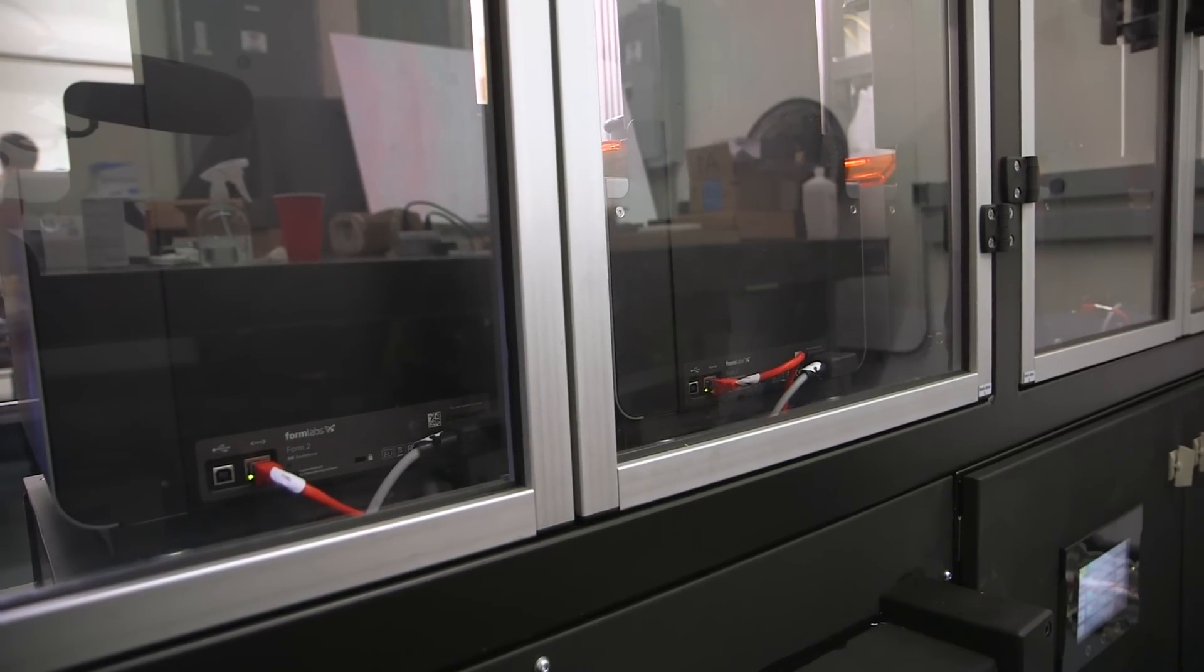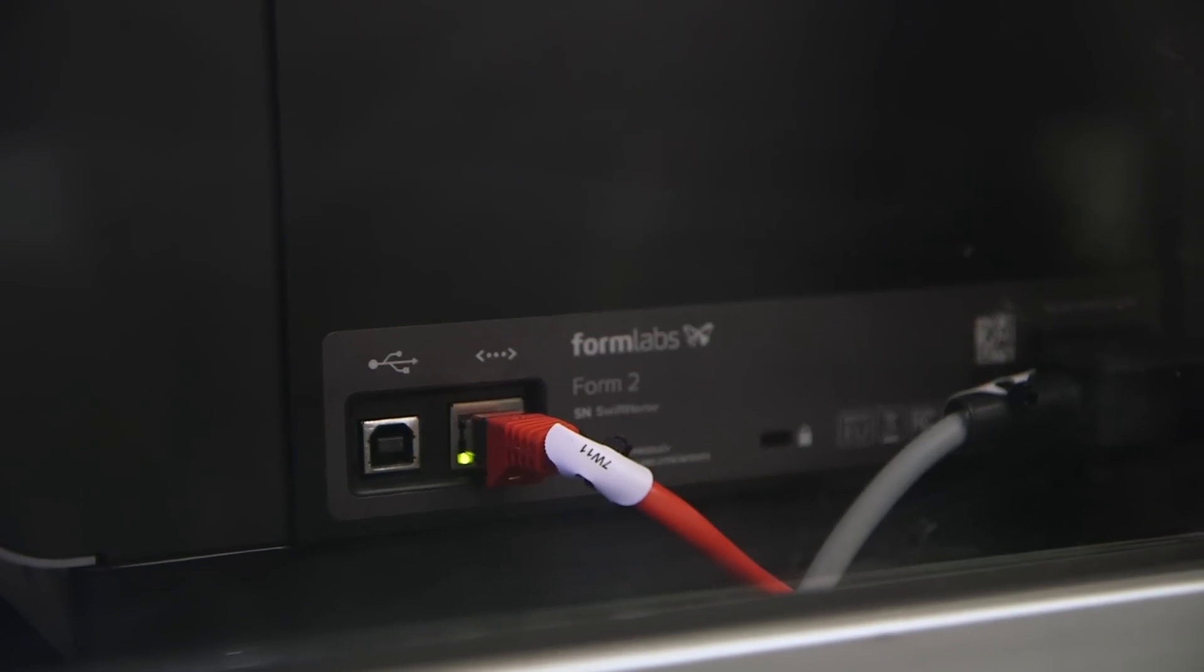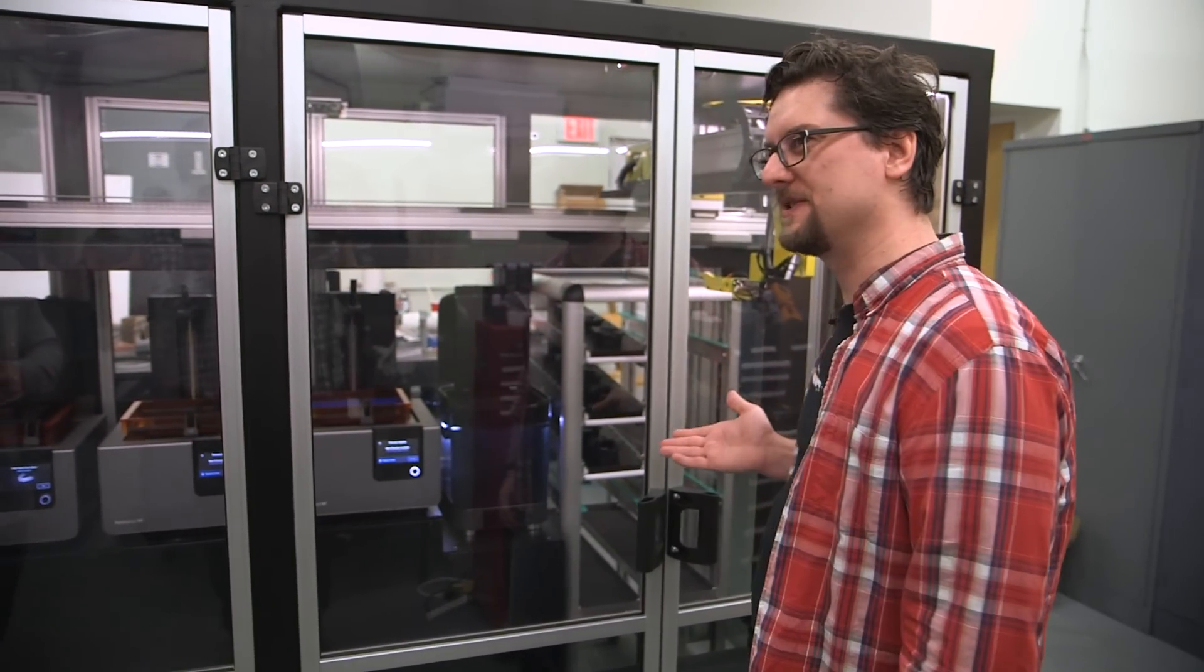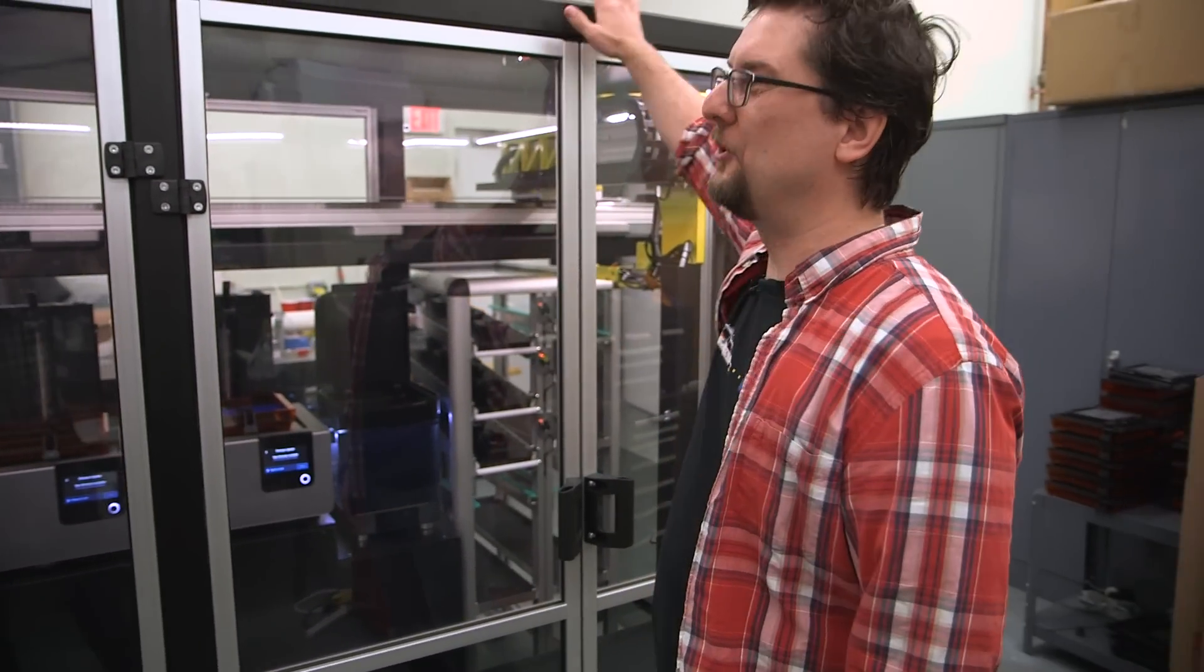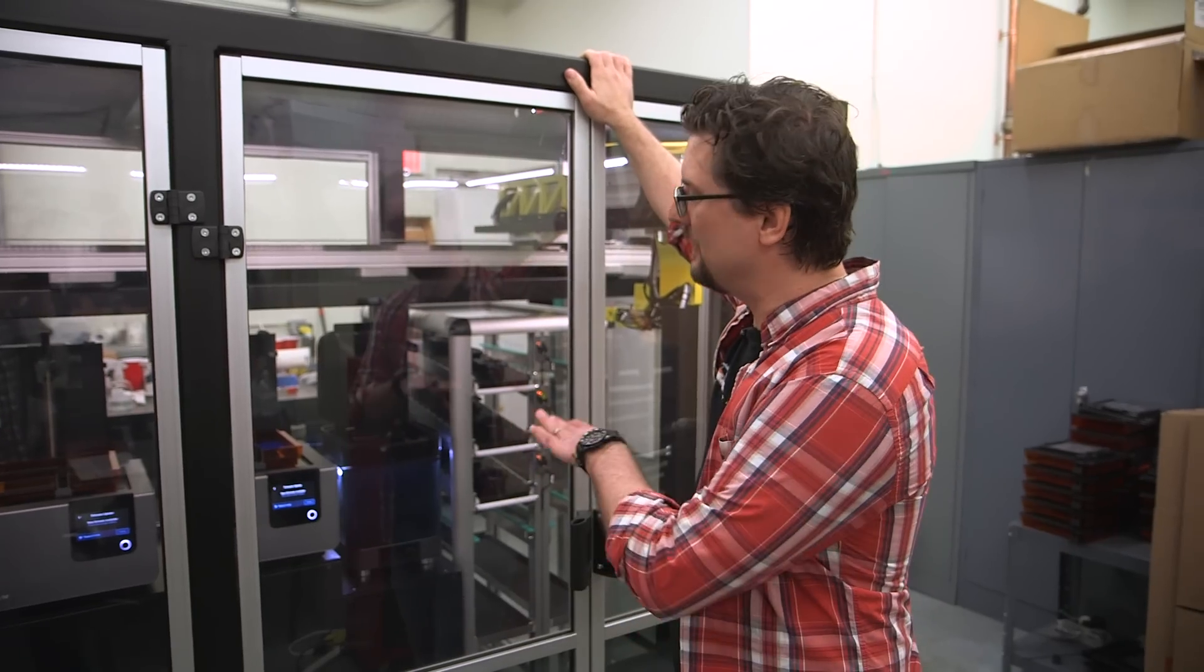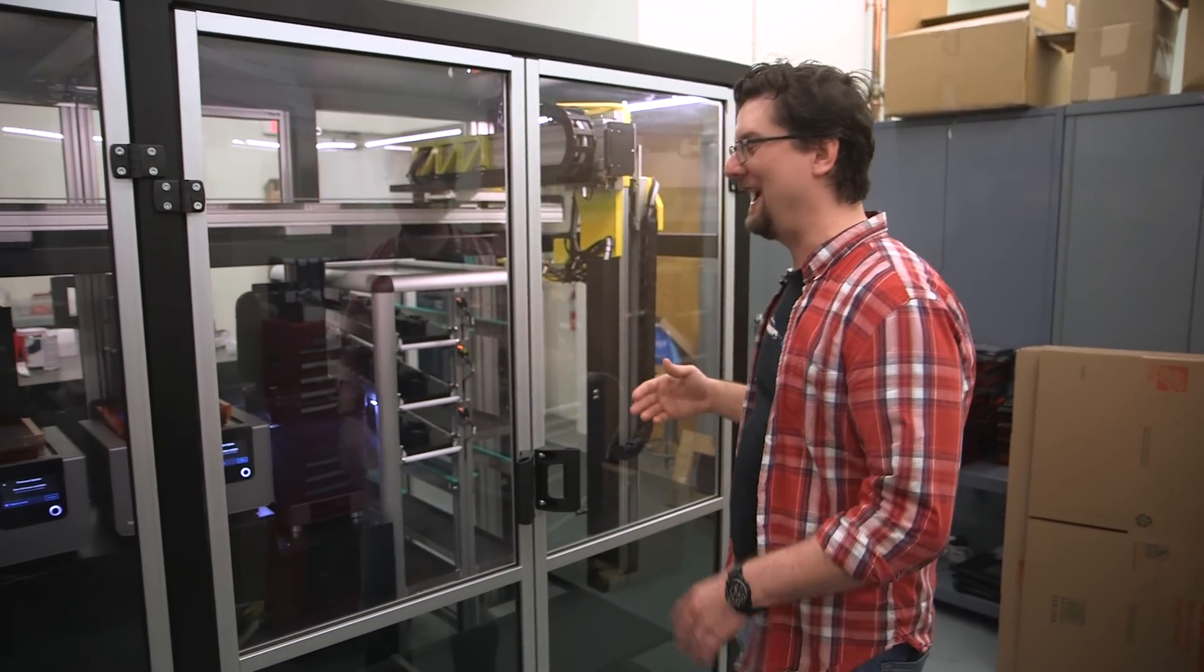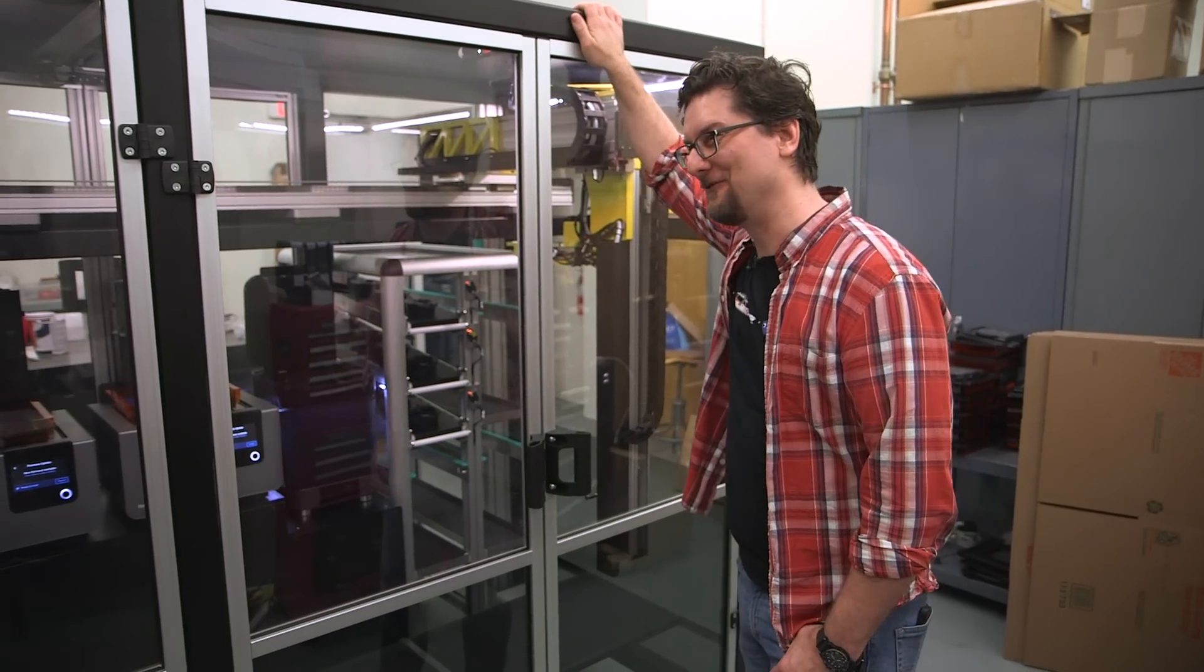When you get a Form Cell, it's coming with five printers, five Form 2s, and then multiple print platforms to swap out, and then this whole housing. I noticed that we don't have the hoods on the Form 2s because we have the outside windows here that are protected from the UV. So how much does a cell run?